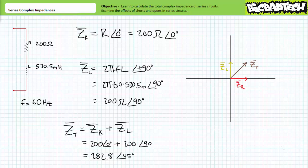When we add ZR plus ZL, we arrive at a value of 282.8 ohms at an angle of 45 degrees. When illustrated on the impedance diagram, ZT — the total impedance of the series relationship of these two elements — appears to be a 50-50 mix of the resistive and inductive nature. Note the angle of the total complex impedance is 45 degrees, midway between resistor land at 0 degrees and inductor town at positive 90 degrees. This is expected given the equal magnitudes of both elements. This balanced condition, however, is only true at 60 hertz.